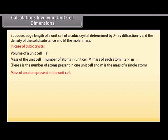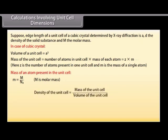The mass of an atom present in the unit cell: M equals M upon N_A, where M is the molar mass. The density of the unit cell equals the mass of the unit cell divided by the volume of the unit cell. Therefore, D equals Z times M divided by A cubed times N_A.